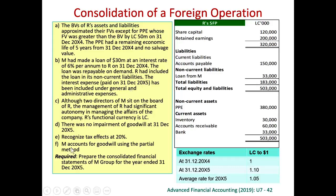The question also says that goodwill should be accounted for using the partial goodwill method, which means there should not be any goodwill component for the NCI. We are asked to prepare the consolidated financial statements on 31st of December 2005.